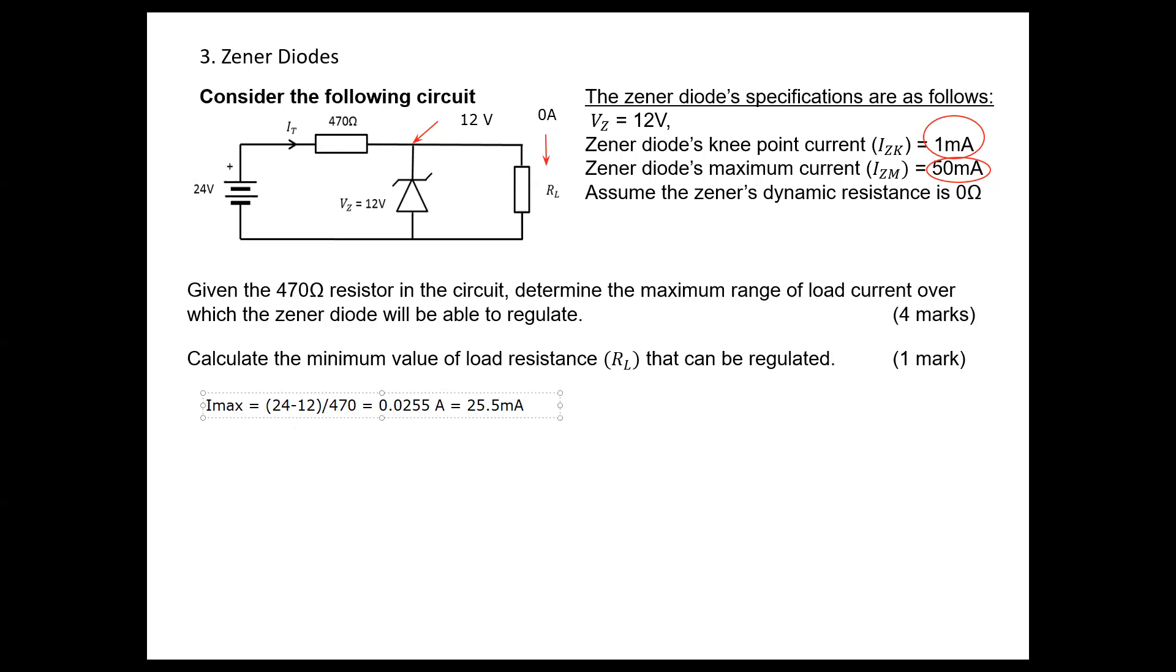This is the current through the resistor because we need to maintain 12 volts around the Zener diode. When we have maximum current, in order to have regulation we need to maintain 1 milliampere through the Zener. In this situation, we need to maintain around 1 milliampere.